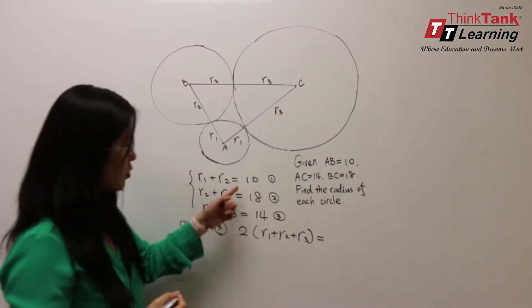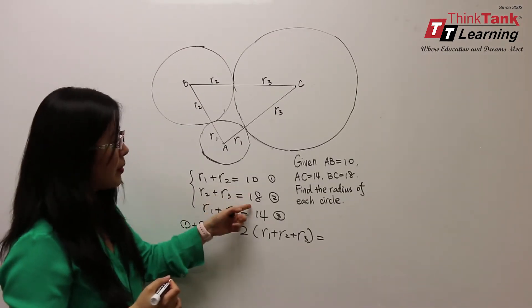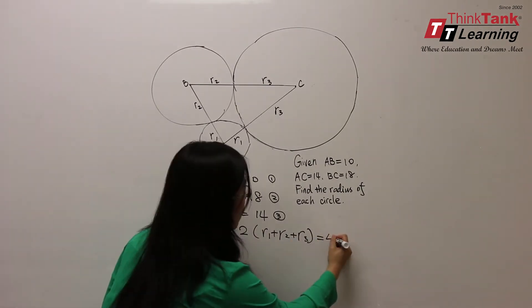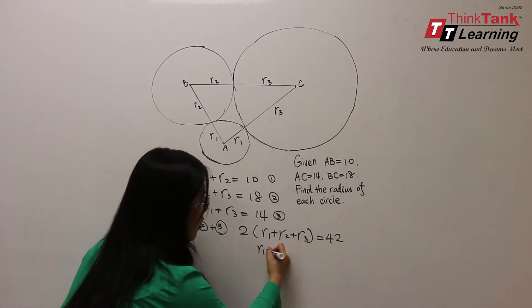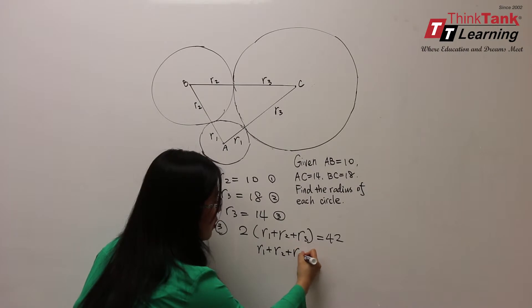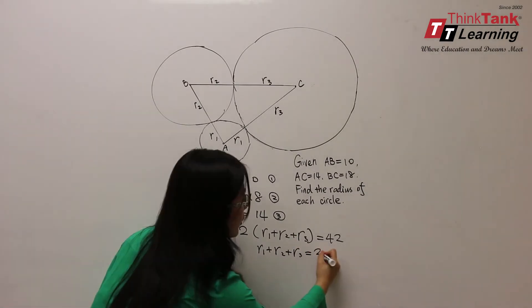which equals the right side, 10 plus 18 plus 14 will be 42. So we have R1 plus R2 plus R3 equals 42 divided by 2, which is 21.